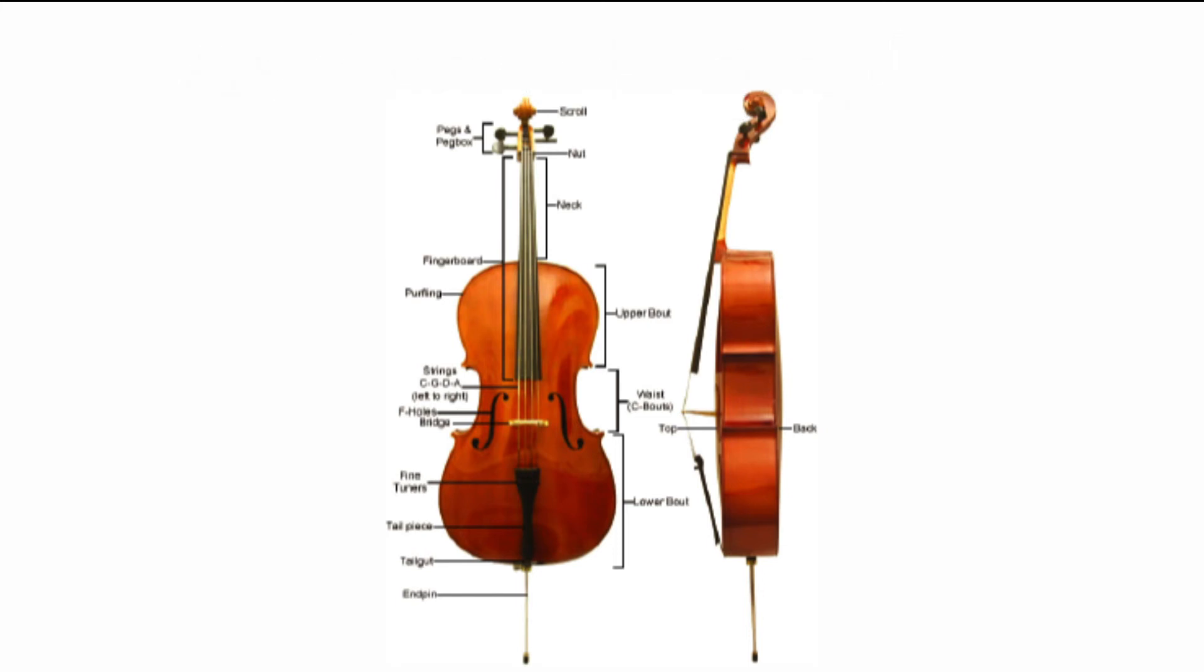Finally, the bridge is created to match the size of the cello. The size goes from one-quarter to four-fourths based off of a person's age and height. After the bridge is positioned, the tailpiece, endpin, and strings are attached into place.